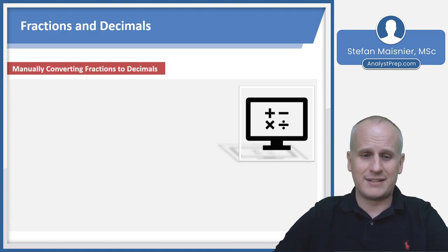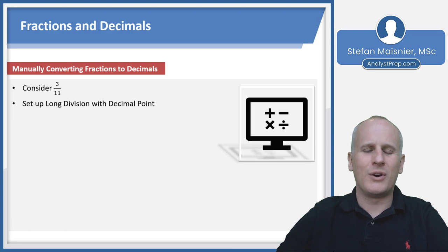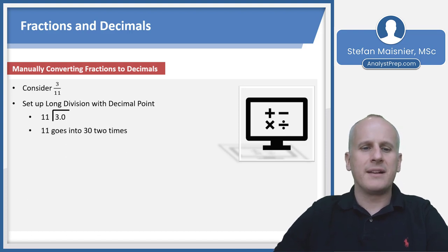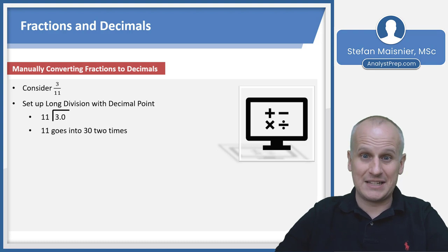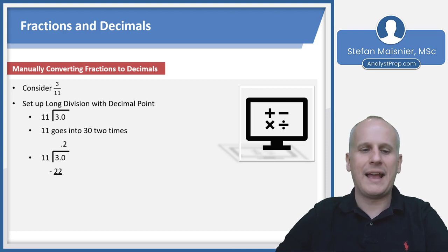Manually converting fractions to decimals—we won't do this often, but let's see how it works. Consider three elevenths. Set up long division with a decimal point: 11 dividing into 3.0. 11 doesn't go into three evenly, so bring in the decimal. 11 goes into 30 two times. Multiply 0.2 times 11 and subtract out 22, leaving 0.8.